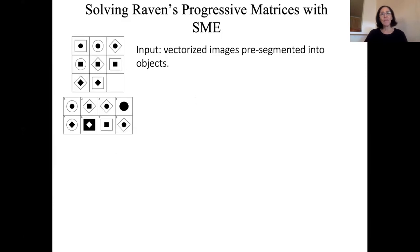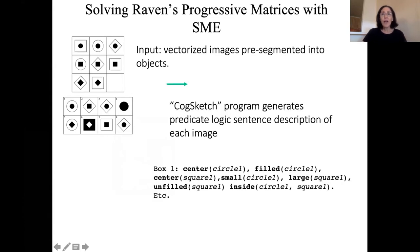What SME does is it has as its input some kind of vectorized images that are pre-segmented into objects. It doesn't even have to extract the objects. Another program from the same group called CogSketch is able to generate predicate logic sentence descriptions of each image. Here's an example of the kinds of predicate logic statements about each image in the matrix. This sort of logic representation is very important to this program.